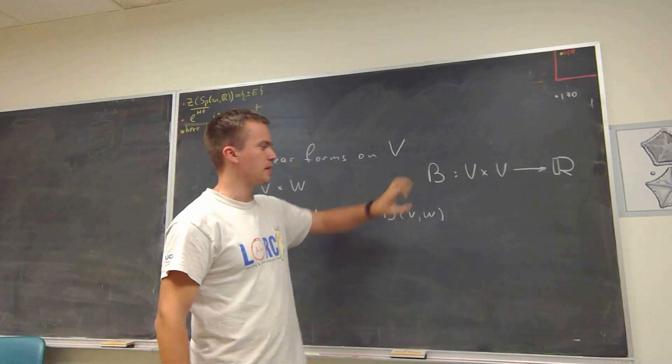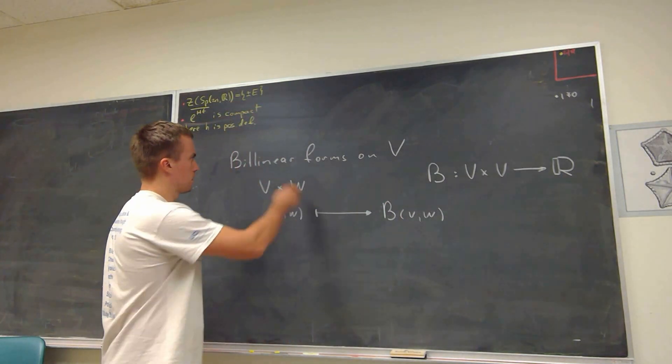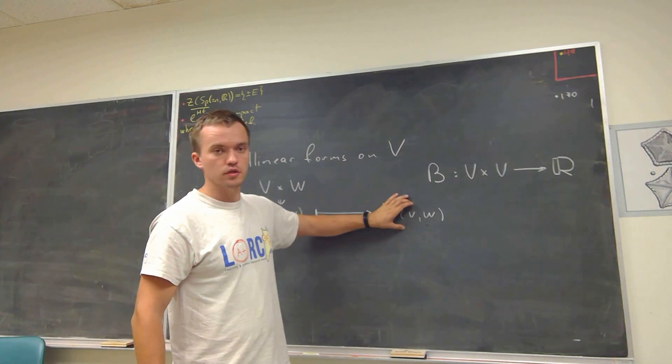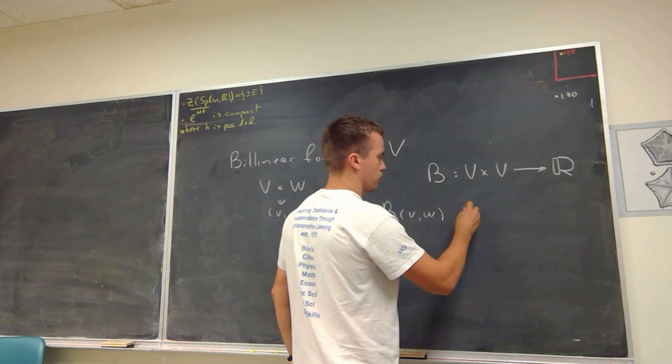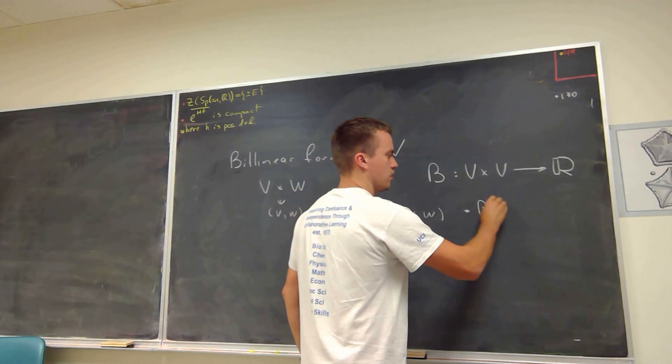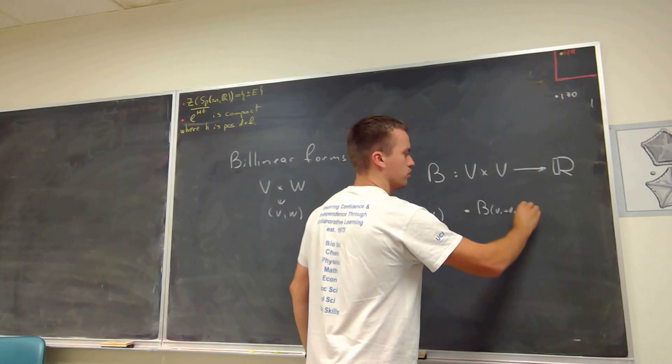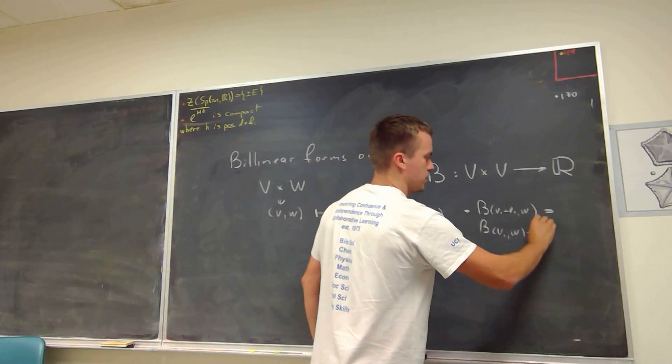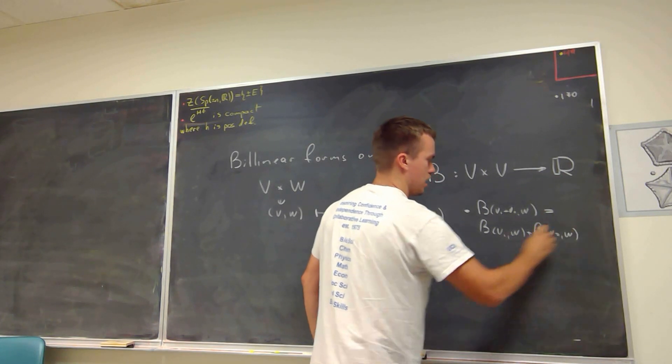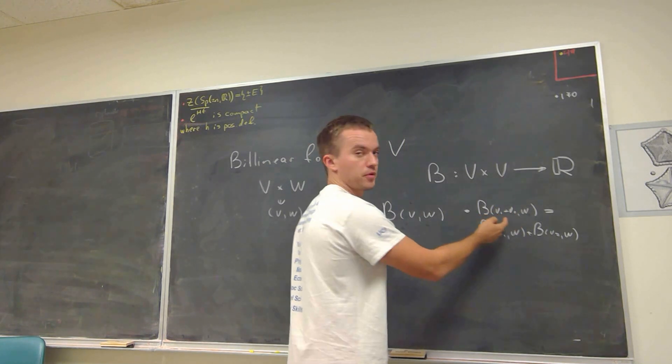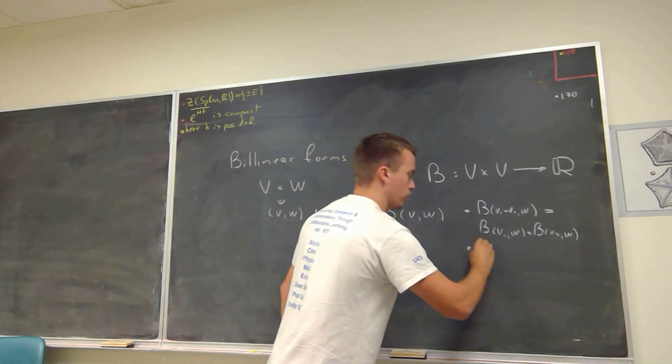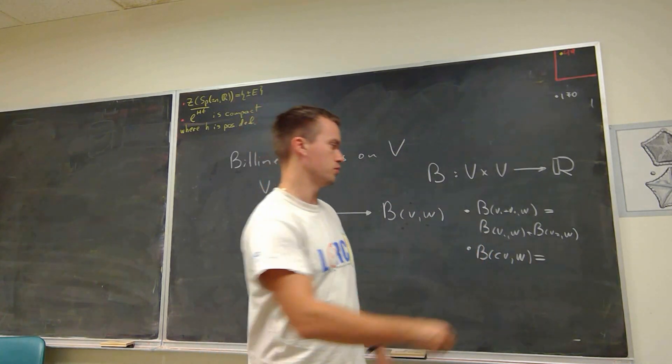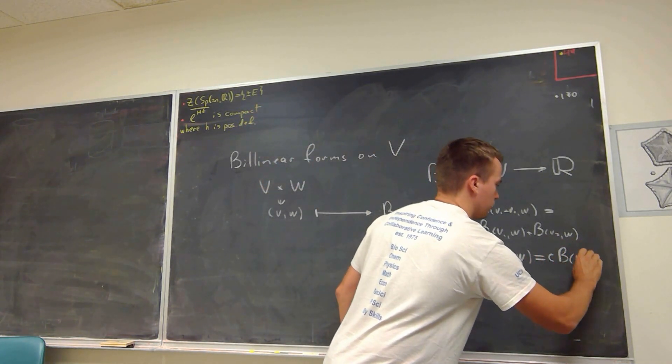So that map is going to have a couple of properties. First, it's called bilinear, so it behaves similar as a linear map, where each of this component is going to be linear. So let me just write, for example, the property for the first component, so that means that B of V1 plus V2, W, is going to be equal to B of V1, W, plus B of V2, W. And the same for the second component, and another property for the first component is going to be that if I'm going to take some constant C, C times V, W, then that is going to be equal to my constant times my bilinear form B(V,W).